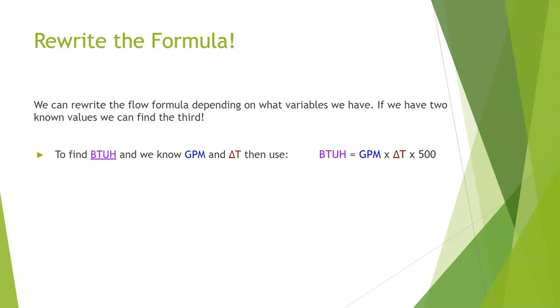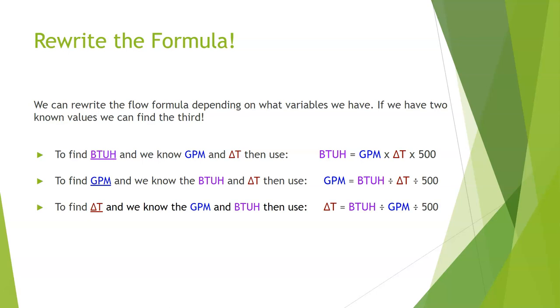The formula we've been using so far is to find BTU when we know GPM and delta T: BTU equals GPM times delta T times 500. But if we want to find GPM and we know BTU and delta T, then we use GPM equals BTU divided by delta T divided by 500. If we need to find delta T and we know GPM and BTU, then we use delta T equals BTU divided by GPM divided by 500.